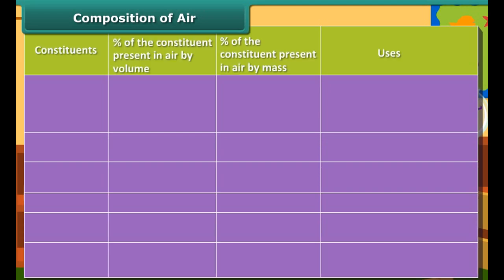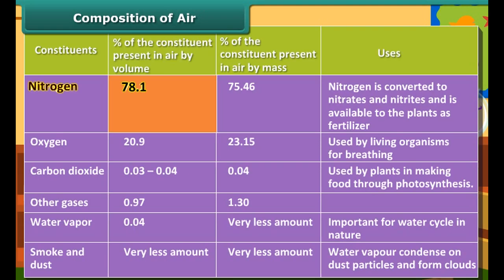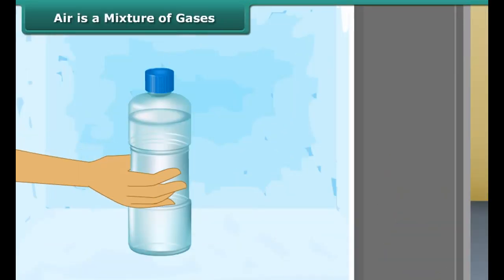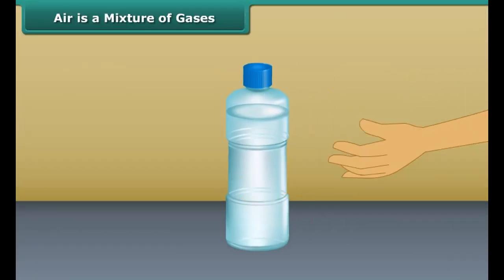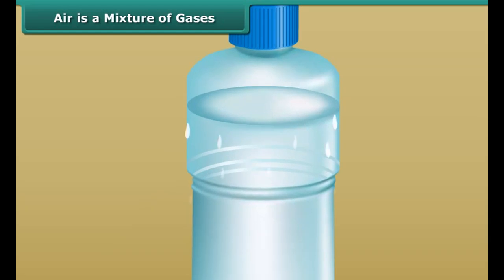What is air made up of? Air contains nitrogen, oxygen, carbon dioxide, and other rare gases. You can see from this table that nitrogen has the largest share, then oxygen, then some rare gases, and finally carbon dioxide has the least. Water vapor, smoke, and dust are present in very small amounts. Do you see that air is a mixture of different gases?